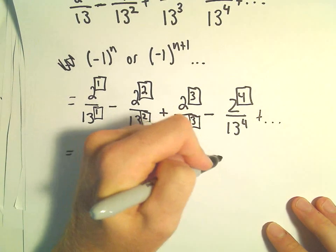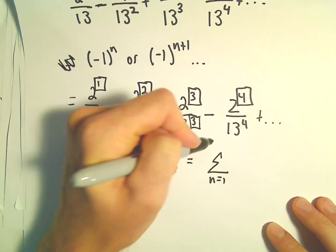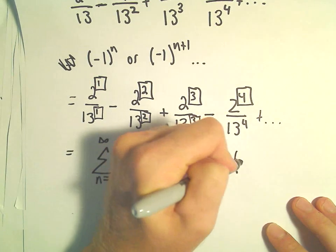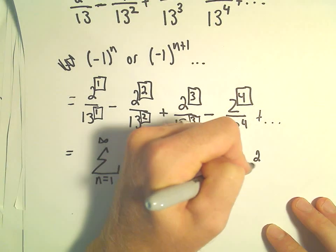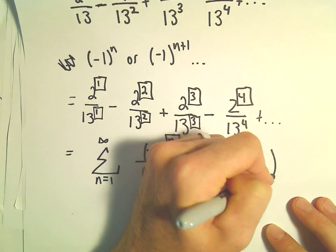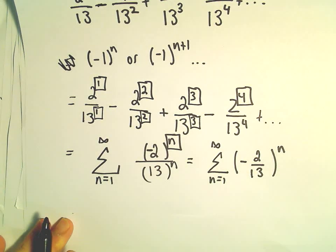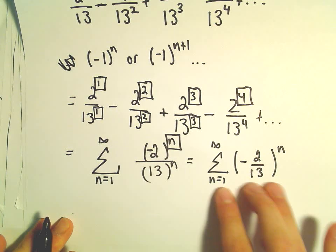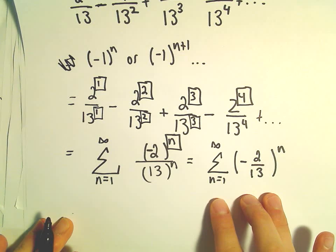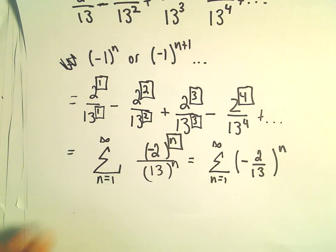I'm going to rewrite this one more time. n=1 to infinity, I'm going to write this as just one big fraction: (-2/13), all raised to the n power. And now we've got a nice, clean little formula to go with our infinite series here.